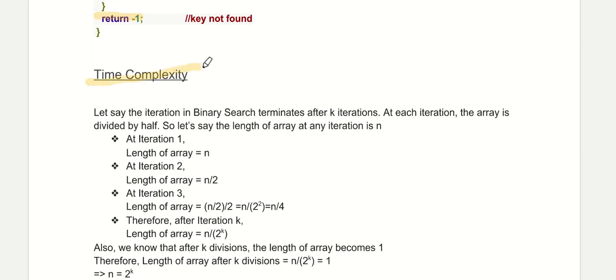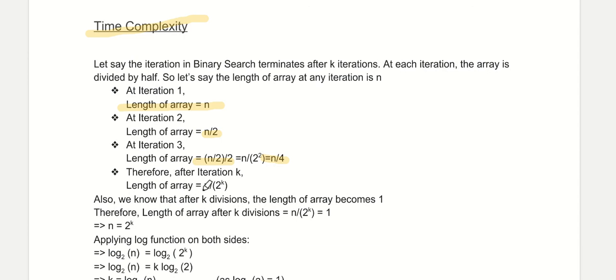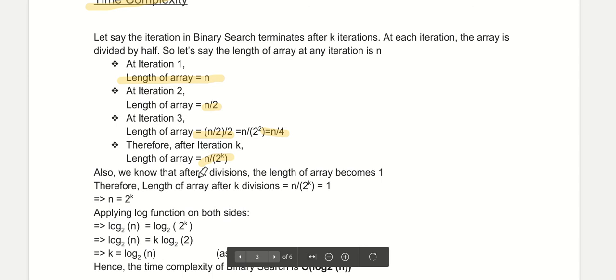Now let us understand the time complexity of the algorithm. Assume we perform k iterations. In the first iteration, the length of the array is n. After the first iteration, the length becomes n divided by 2, because we shift either the left variable to mid plus 1 or the right variable to mid minus 1. At the third iteration the length reduces again to n divided by 4.